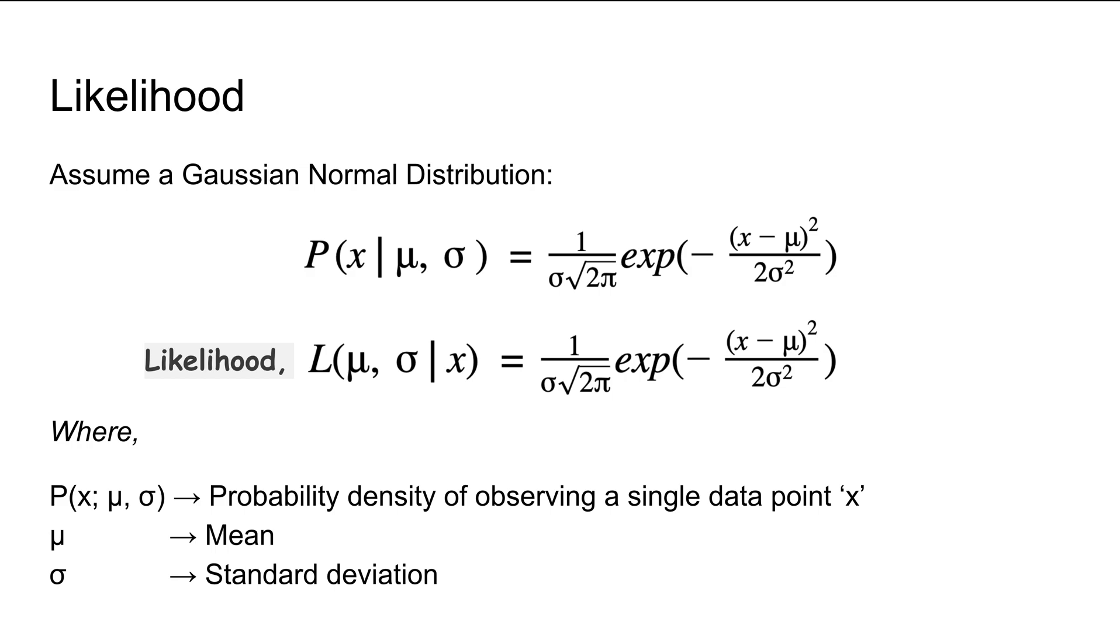In Part 2, let's look at likelihood functions using a Gaussian normal distribution. Here are two equations—the top and bottom are the same except what's on the left-hand side. In the top equation, P is the probability density; in the lower equation, L is for likelihood. Mu is for mean and sigma is for standard deviation.